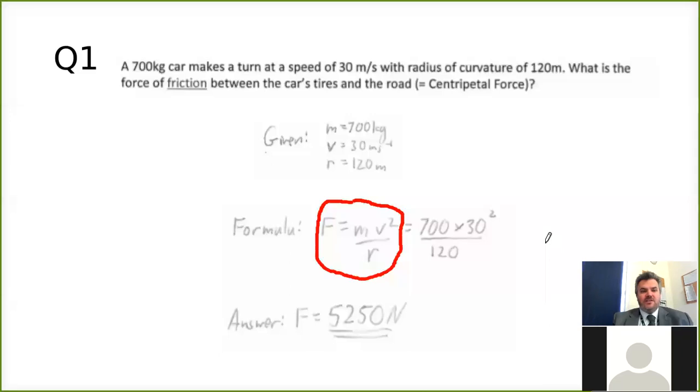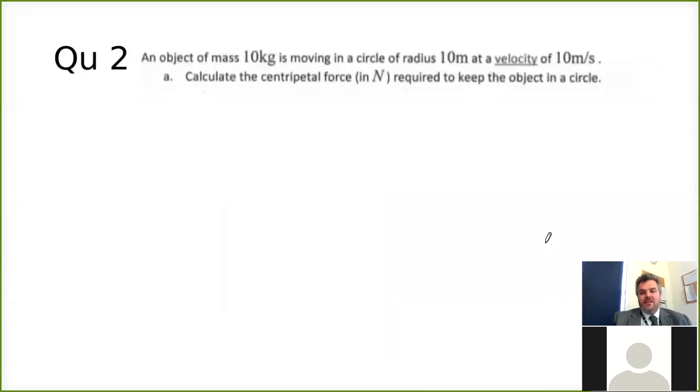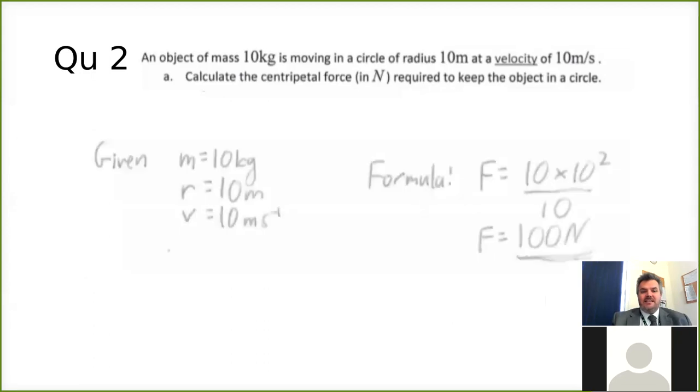So if we look at question two, it's almost exactly the same. You've got an object with a mass of 10 kilograms, you're given the radius of the circle it's moving in, and you're given the velocity of 10 meters per second. You have to calculate the centripetal force. So it's exactly the same as before. You're given the mass, the radius and the velocity or speed. Then it's force is mass times velocity squared divided by radius. The answer comes out to be 100 newtons. Notice how the substitution is put in place. When you're doing exam questions, if you don't put the substitution in place like that you might not get the mark.